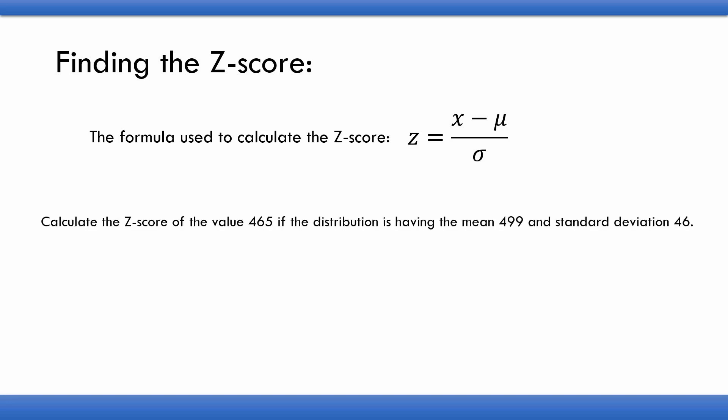Here is an example. We need to find the Z-score of a value 465 from a normal distribution with mean 499 and standard deviation 46. Here x = 465, mu = 499, and sigma = 46. Substituting those values into the formula, we get the Z-score as minus 0.7391.